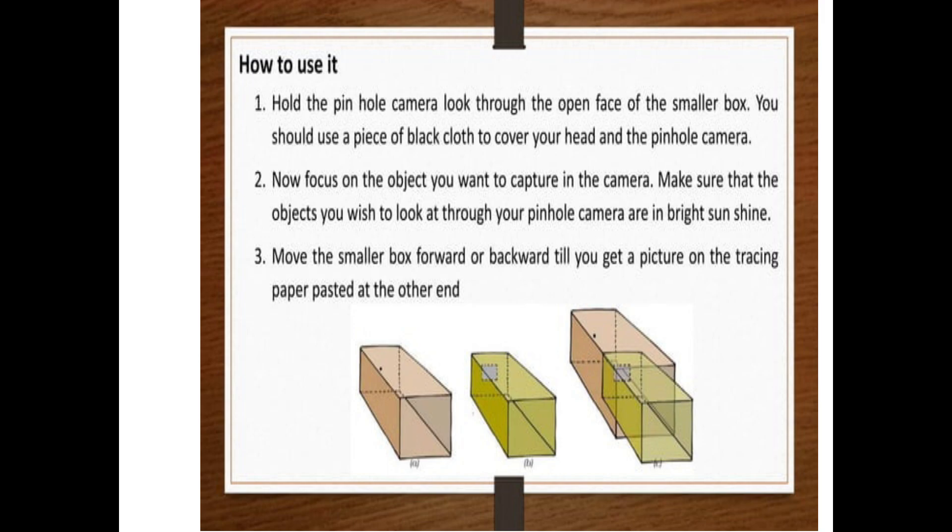Now how to use it. Hold the pinhole camera. Look through the open face of the smaller box. You should use a piece of black cloth to cover your head and the pinhole camera, so no much light falls on the camera. Now focus on the object you want to capture in the camera. Make sure that the object you wish to look at through your pinhole camera is in bright sunshine. Move the smaller box forward or backward till you get a proper image on the tracing paper pasted at the other end.